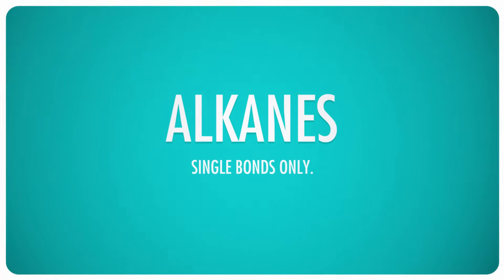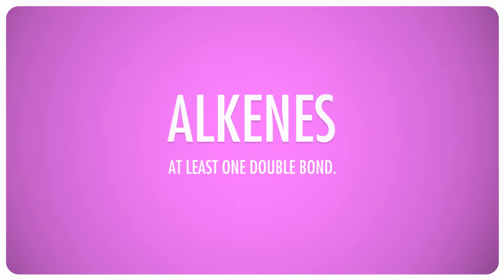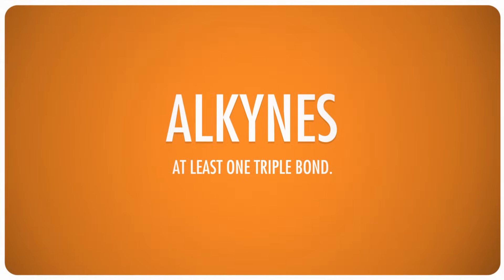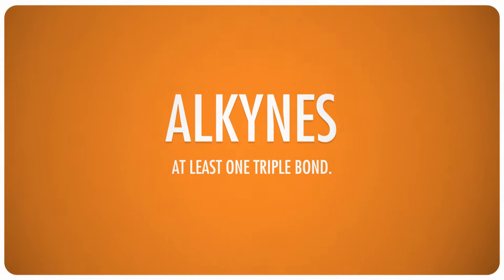Alkanes, you will recall, are saturated hydrocarbons. All of the carbons in a saturated hydrocarbon are bonded to the maximum number of atoms that carbon can accommodate — four. In unsaturated hydrocarbons, some of the carbon atoms are double or triple bonded with each other, so they're only bonded with three or two atoms. And when those double and triple bonds appear, we've got whole new classes of hydrocarbons. If they've got a double bond, we call them alkenes, and those with triple bonds are alkynes. Three words representing three different groups of organic compounds: alkanes for all single bonds, alkenes if they contain double bonds, and alkynes if they contain one or more triple bonds.